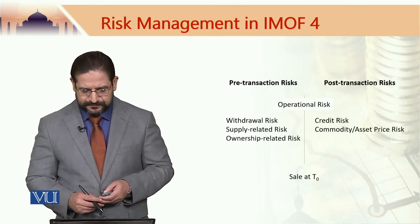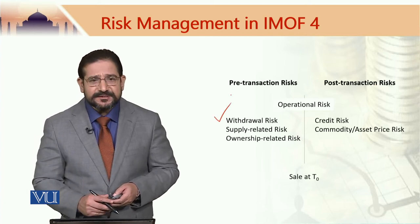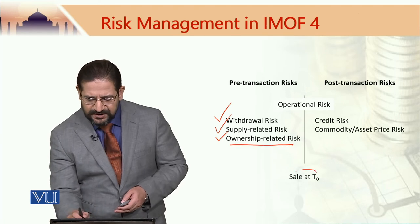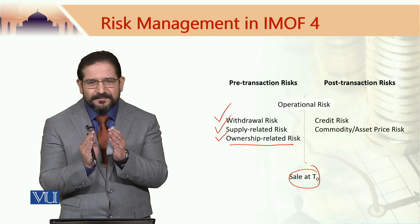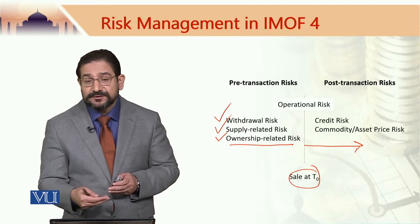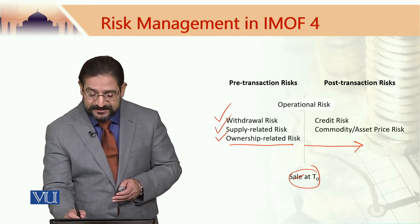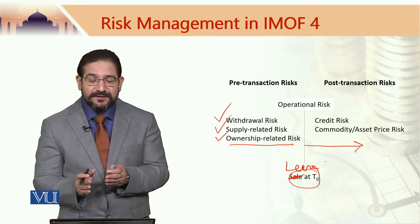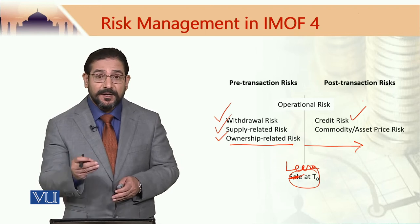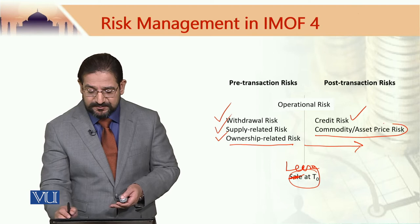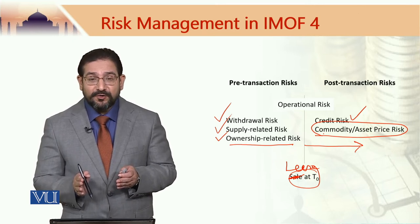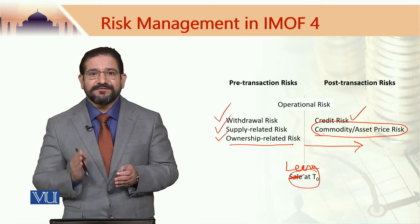To summarize, pre-transaction risks include withdrawal risk, supply-related risks, and ownership-related risks. Ownership-related risks before the transaction are rather minimal. However, they become quite significant once the lease has taken place and the bank has leased the asset to the customer. The bank then faces credit risk — i.e. delay in rental payments — and commodity or asset price risk, which persists as long as the bank is the rightful owner of the asset, i.e. until the end of the financing period.